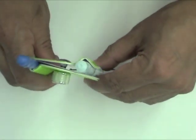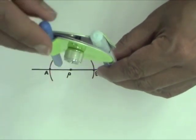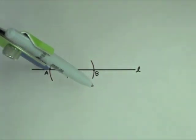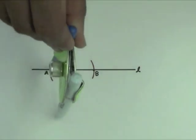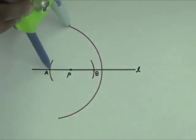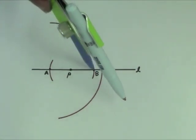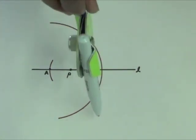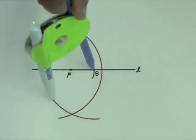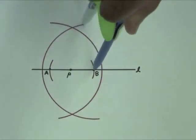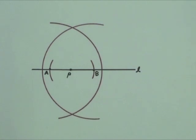Open the compass wider. Place the compass point on A and draw a large arc. Without changing the compass width, place the compass point on B and draw an arc that intersects the previous arc. Label the two points of intersection as X and Y.